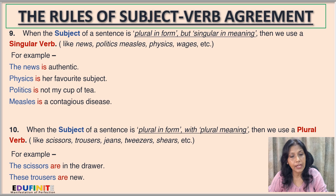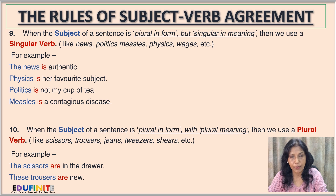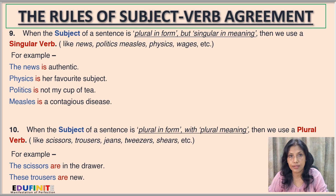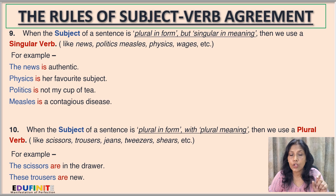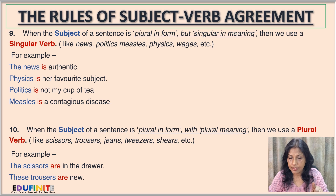'Measles is a contagious disease.' Similarly, 'measles' ends in 's' but is not plural in form or meaning, so we use the singular verb 'is'.